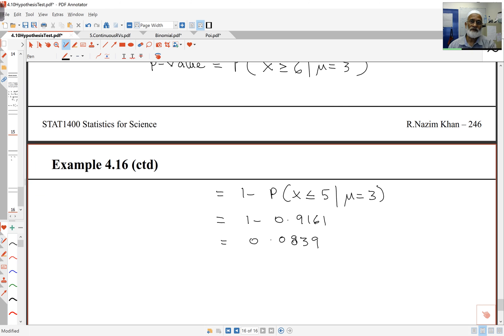My significance level was 2.5%, so this is bigger than 0.025, which means there's insufficient evidence to reject the null hypothesis.